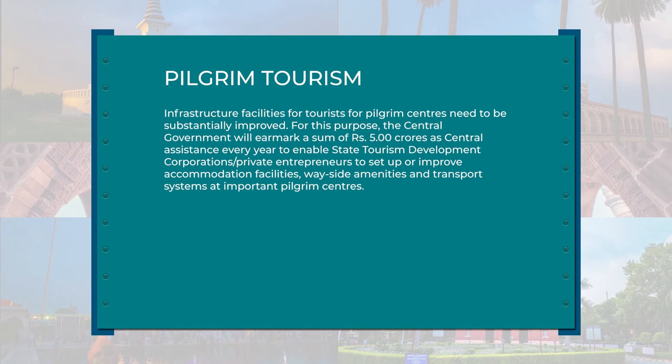For this purpose, the central government would earmark a sum of 5,000 crores as central assistance every year to enable state tourism development corporations and private entrepreneurs to set up or improve accommodation facilities, wayside amenities, and transport systems at important pilgrim centers.